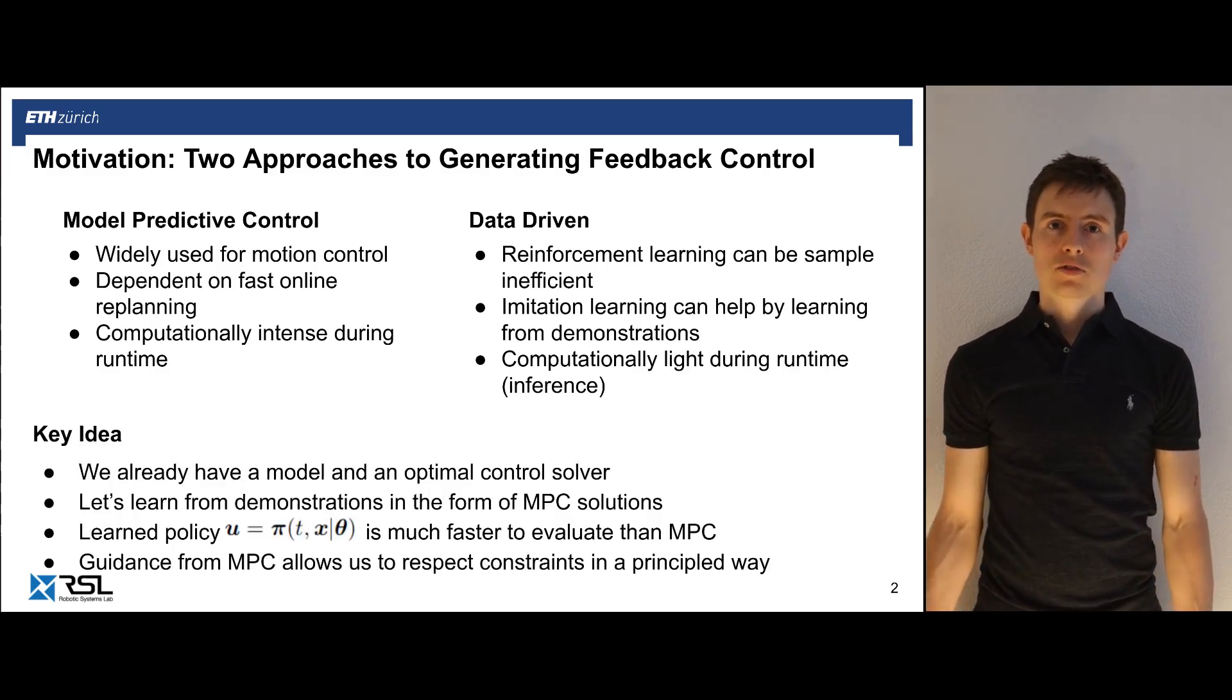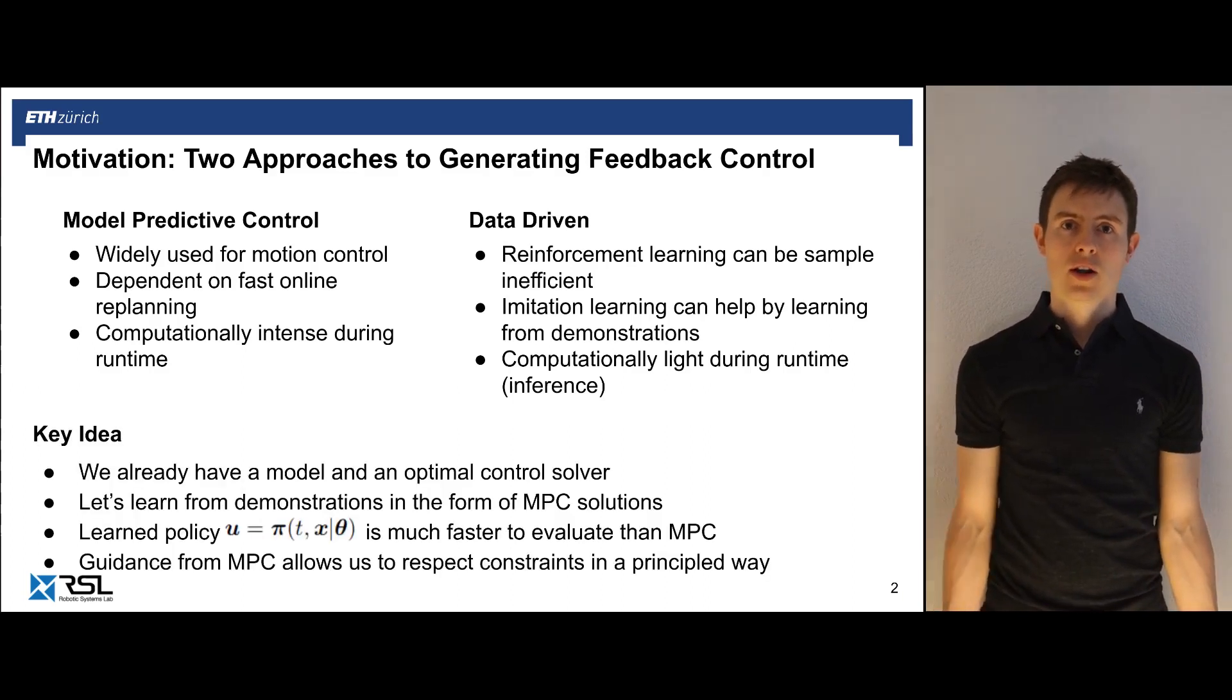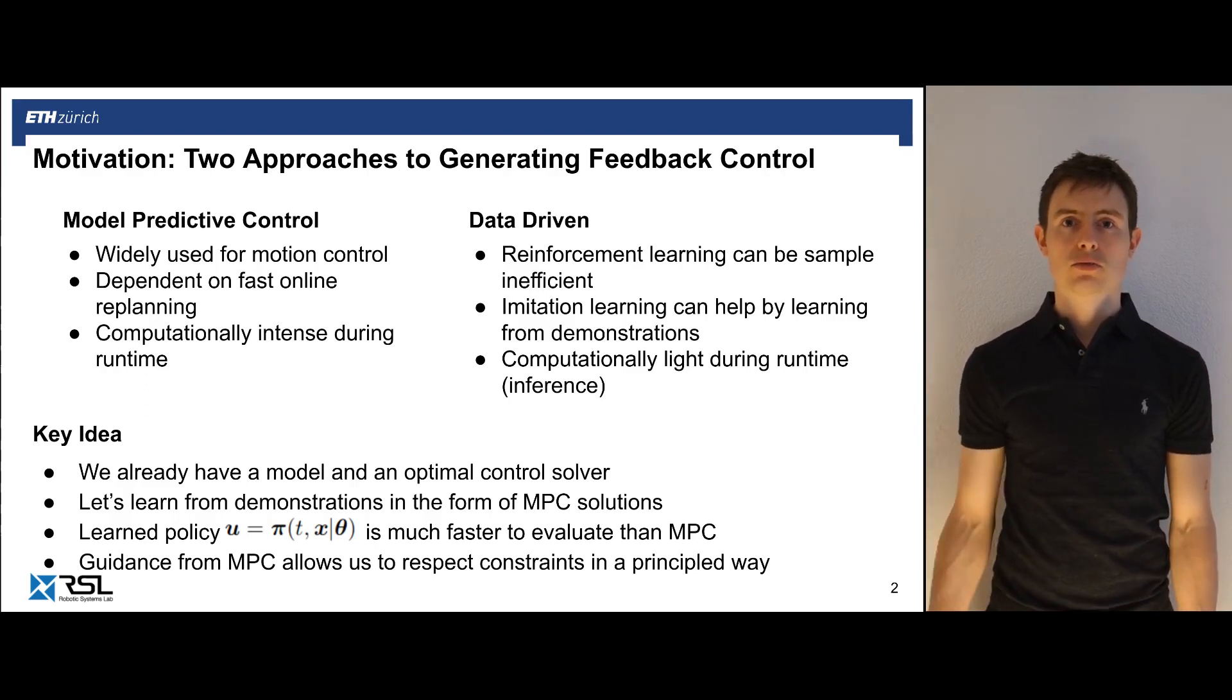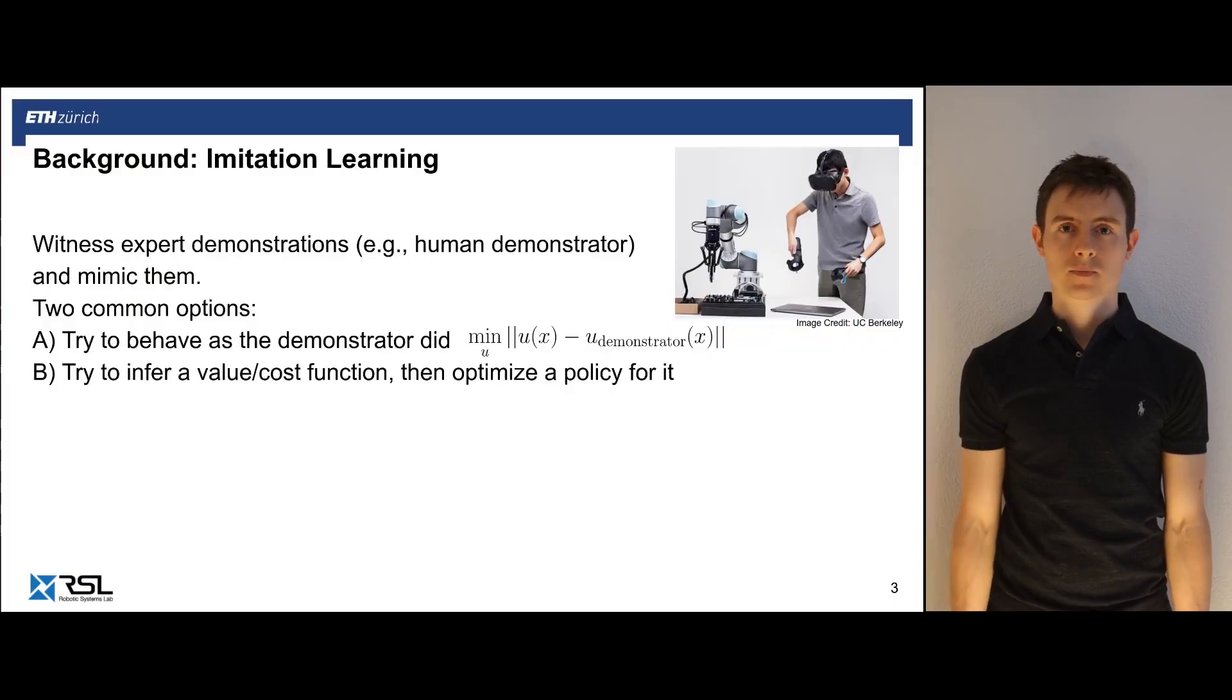Our work starts from the assumption that we already have a model and an optimal controller for it, but it might be too slow to execute on the real system. So we are thinking about how can we learn a controller from our optimal solutions and distill the MPC algorithm in one feedback network that can then be evaluated much faster at runtime. The guidance from MPC samples allows us also to respect constraints in a principled way.